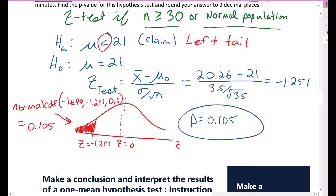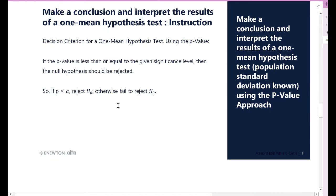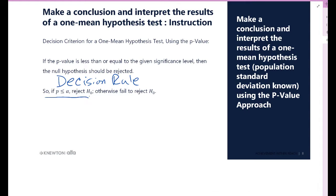That is our p-value of 0.105. In the next video we'll see a more efficient calculator method. Now for conclusions: the decision rule says if your p-value is less than or equal to alpha — the level of significance — you reject the null hypothesis. Otherwise, you fail to reject the null hypothesis.